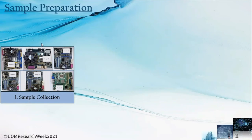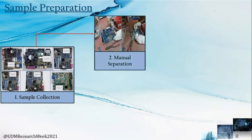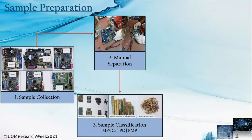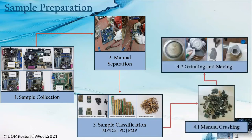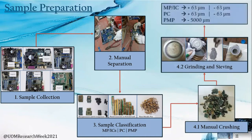In the sample preparation stage, discarded motherboard samples were first collected. Then, electronic components were separated manually. Thirdly, samples were classified into three classes: microprocessors and IC components, lateral connectors and network cards, and metallic pins. After that, manual crushing and grinding in a mortar were done. Finally, ground samples were sieved and size fractions were obtained for each sample class. However, we were unable to achieve minus-63 micrometer fractions for plated metallic pin samples because of the high malleability of gold.